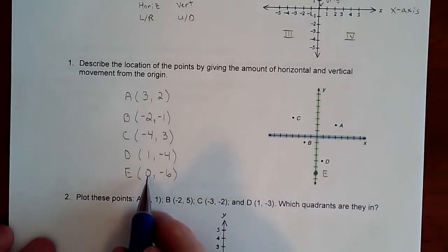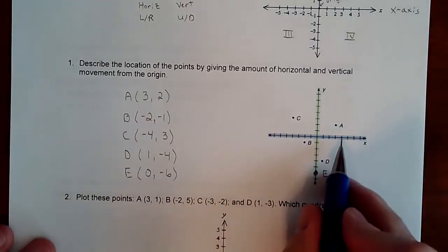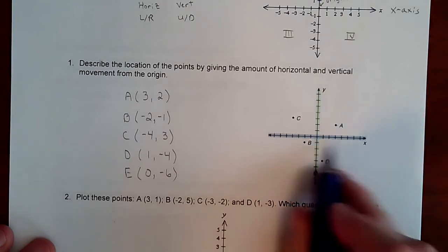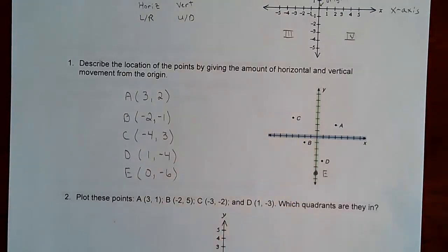That's how you deal with something that's on the x-axis or on the y-axis. There is no left and right movement, just up and down movement. If you had a point on the x-axis, there'd be no up and down movement, so no y value. Your y value would be zero, just left and right movement.